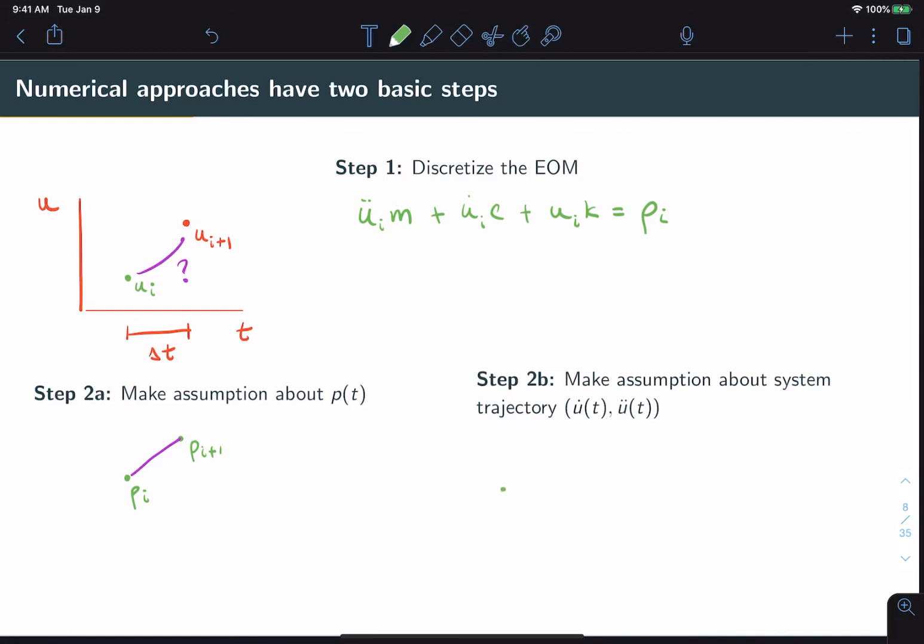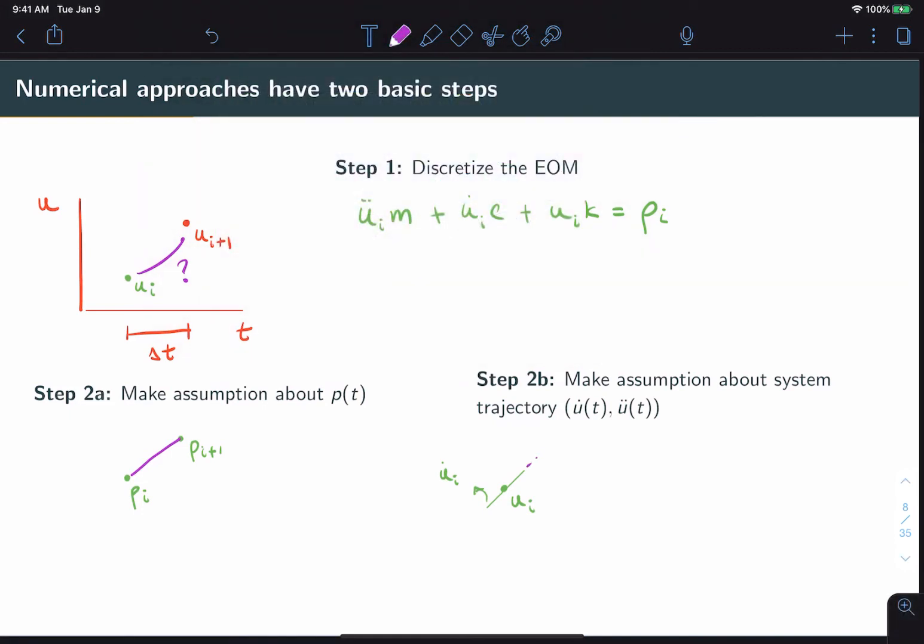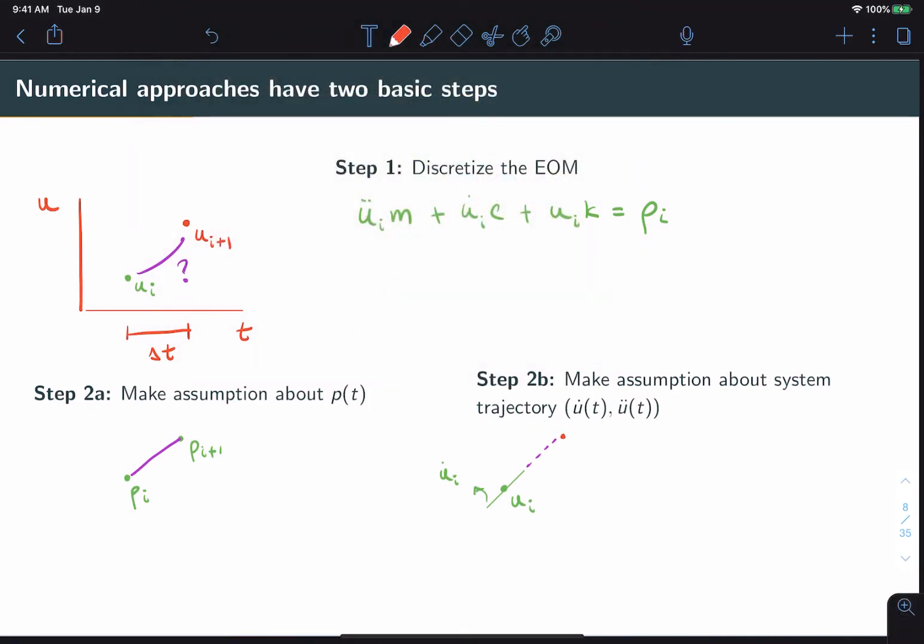On the other hand, maybe we don't want to make any assumptions about the force, we can instead make some assumptions about the trajectory of the system. By trajectory, I mean either u dot or u double dot, the velocity or the acceleration. We can look, for example, at our point ui. We know that. We also supposedly know the slope at that point, which is our u dot i. We can assume that the trajectory over a small time interval remains constant, and therefore will lead us to our unknown point ui plus one.